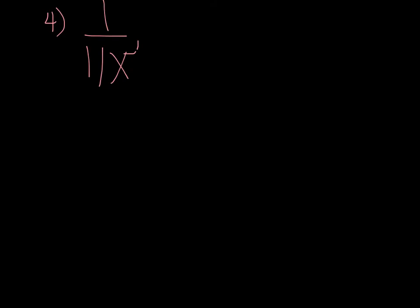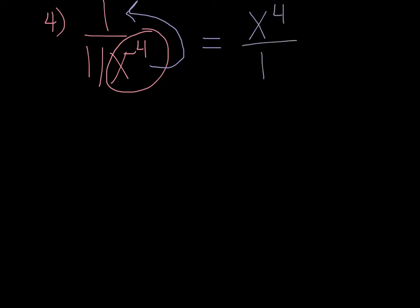Number 4: simplify the expression completely, and the expression is 1 over 11x to the negative 4. The x to the negative 4 needs attention — it needs to be changed to a positive 4 and brought up to the numerator. The 11 doesn't have any exponent on it, so it just stays. We get x to the 4th over 11.